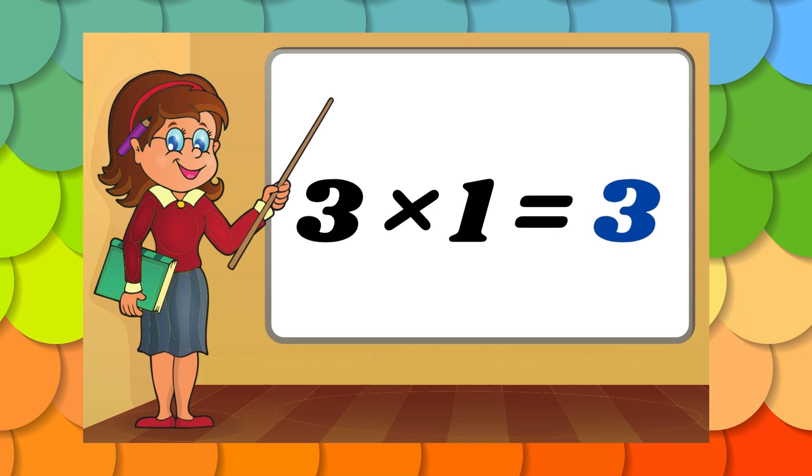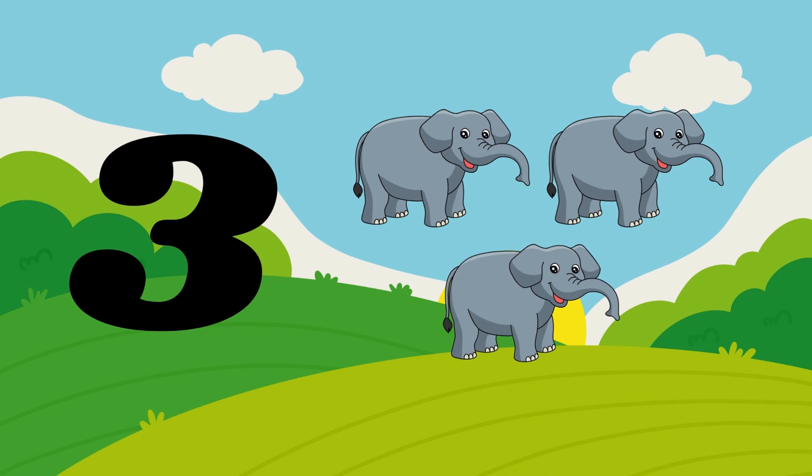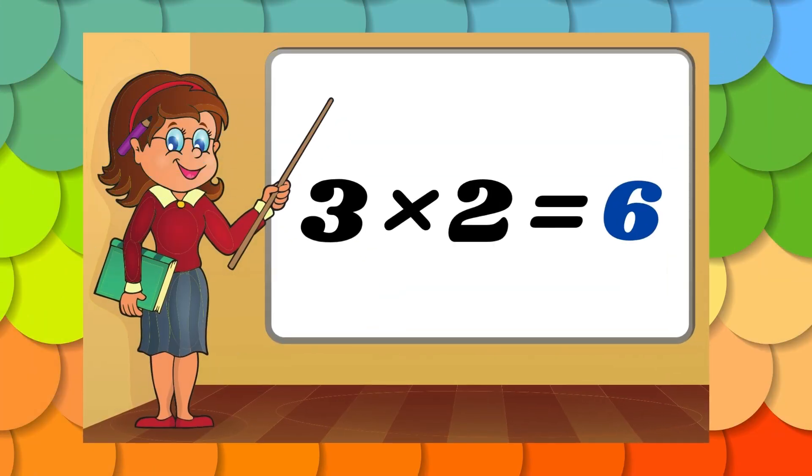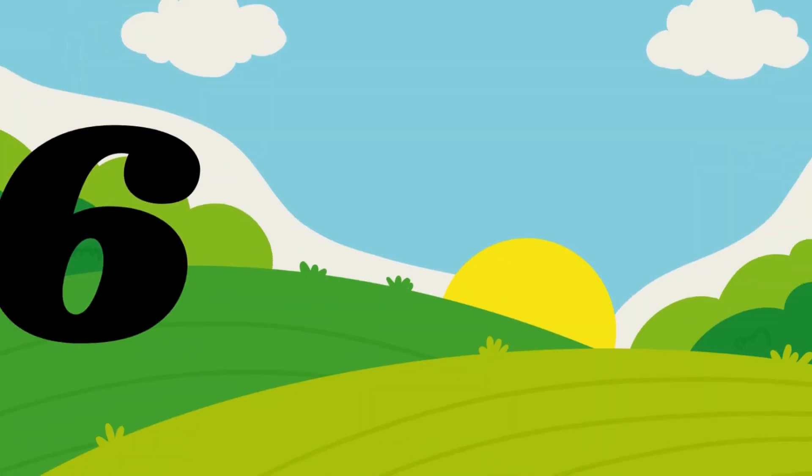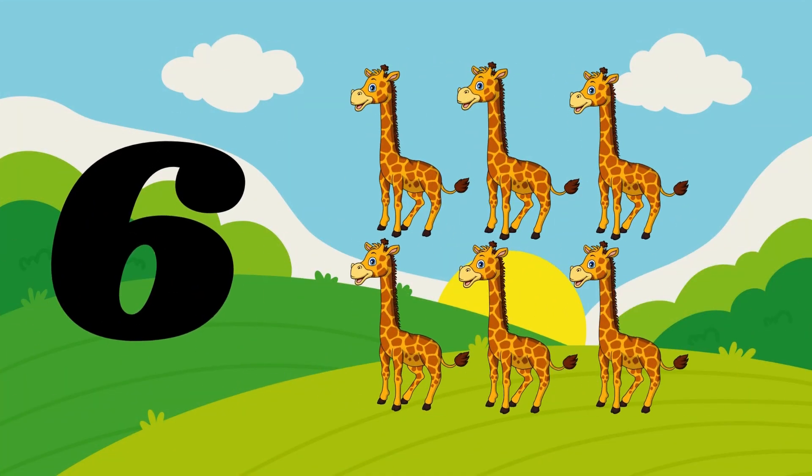Three ones are three. Three cats, three elephants. Three twos are six. Three twos are six. Six dogs, six giraffes.